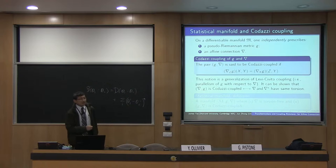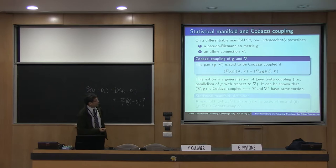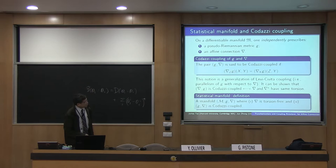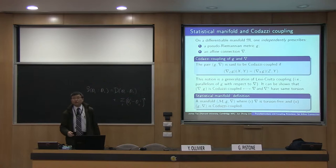This is a very nice generalization of the coupling between a connection and a geometric tensor or operator. It can be shown that NABLA G being Kodazzi coupled is equivalent to saying that NABLA and NABLA-star, the dual connection, have the same torsion. This leads to the well-known definition of a statistical manifold: a manifold where G and NABLA are Kodazzi coupled and the F-I connection is torsion-free.